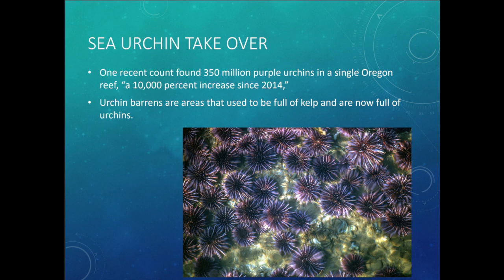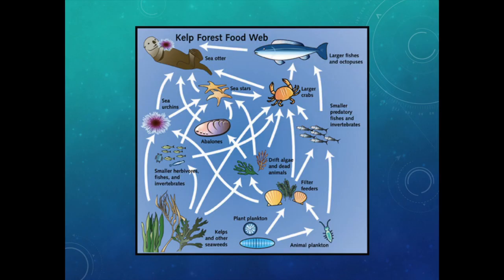Sea otters are called the 'protectors of the kelp beds.' With the major decline of both sunflower sea stars and sea otters, the purple sea urchin is taking over and devouring kelp in enormous numbers. One count found 350 million purple sea urchins in a single Oregon kelp reef area — a 10,000 percent increase since 2014. Scientists now call areas where kelp has been replaced entirely by sea urchins 'urchin barrens.'